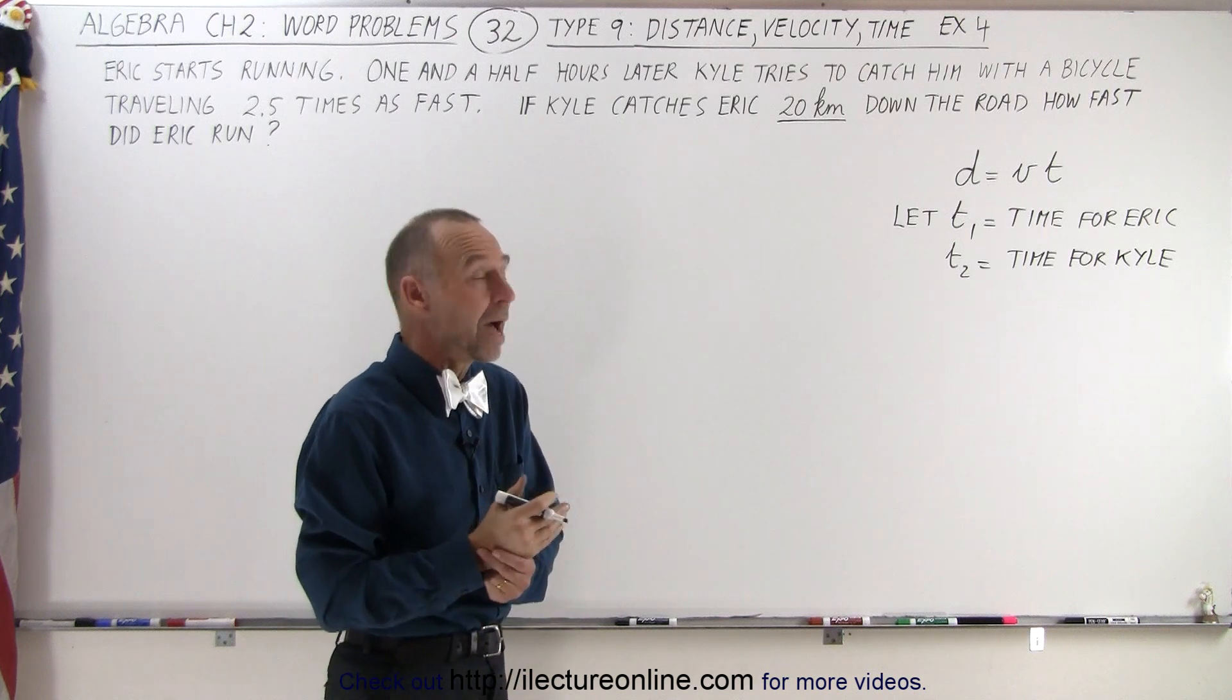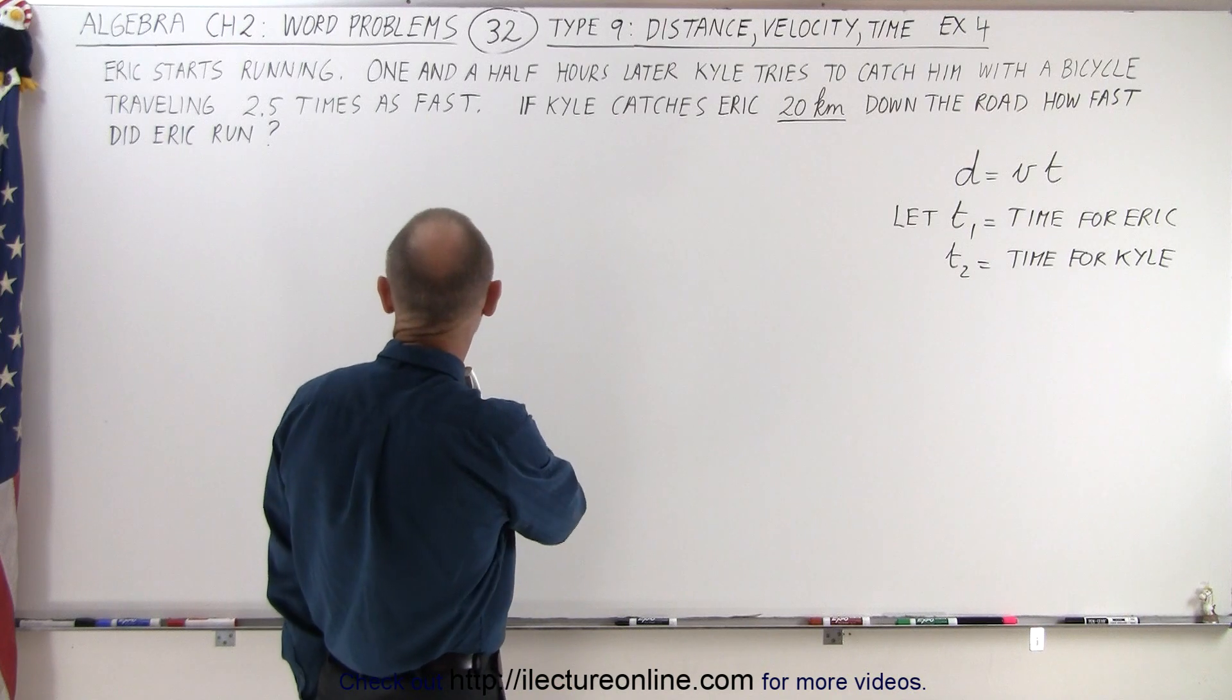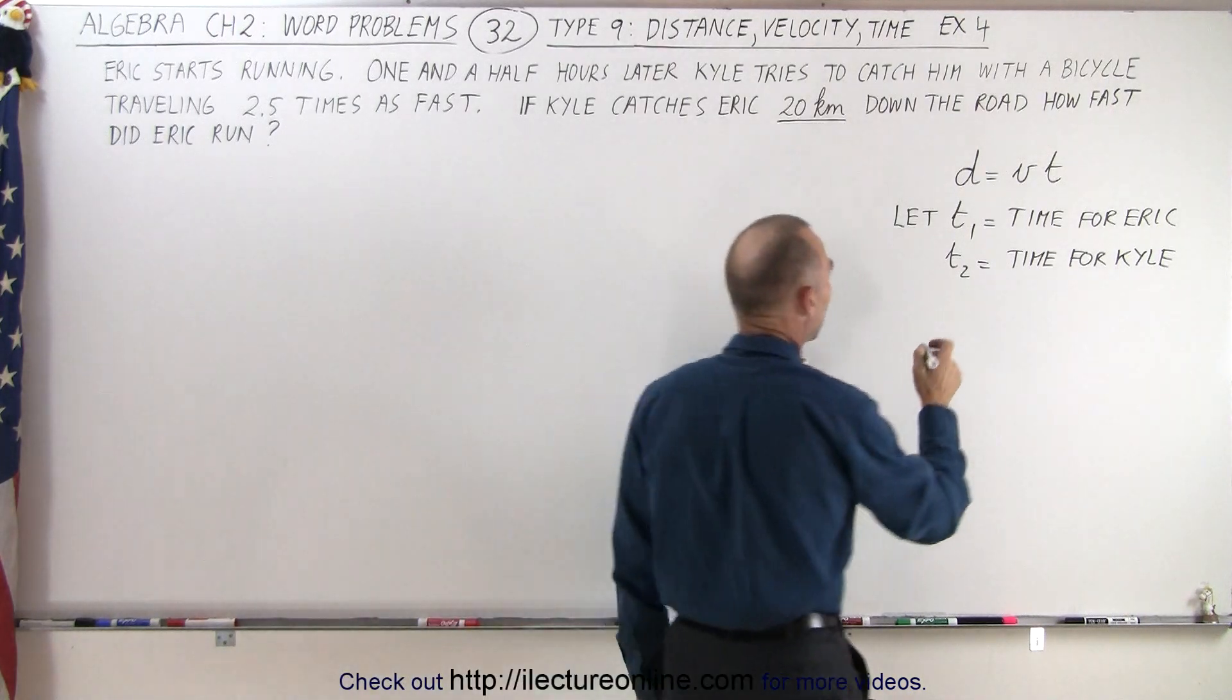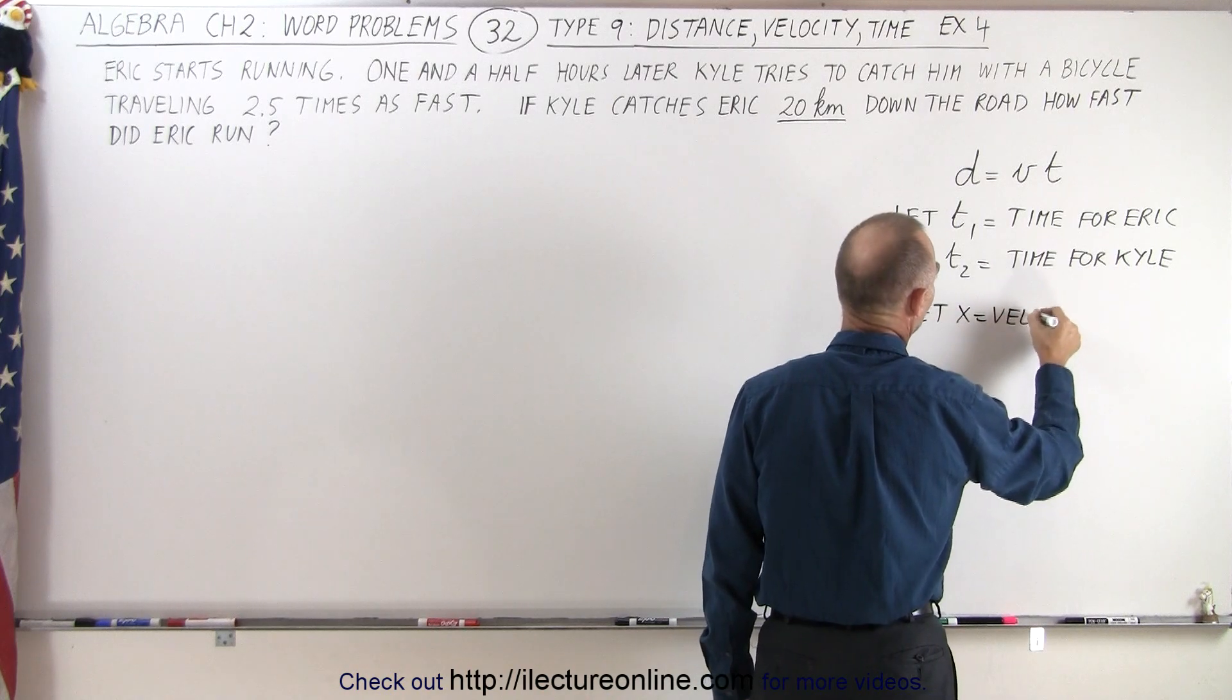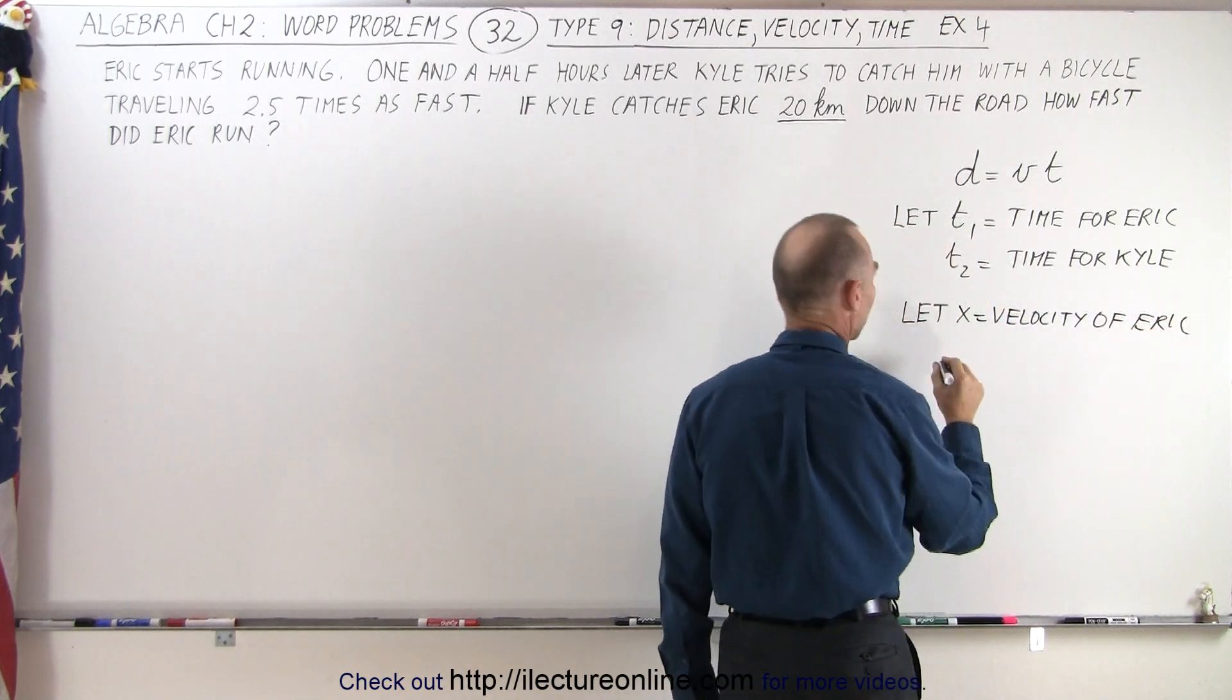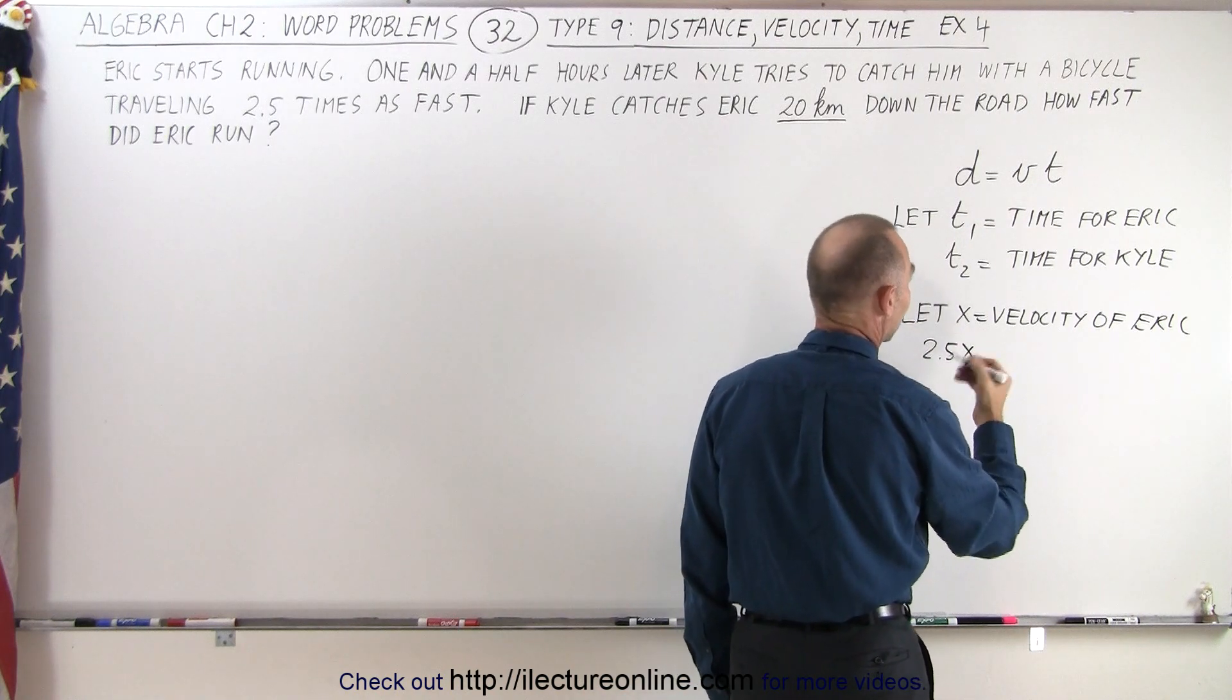Next we need to somehow express their velocities in terms of x. Now since Eric is the slowest of the two, we can let x equal the velocity of Eric, and then 2.5x is equal to the velocity for Kyle.